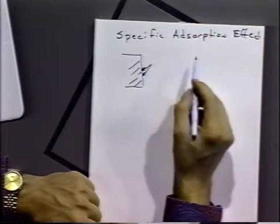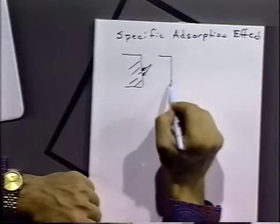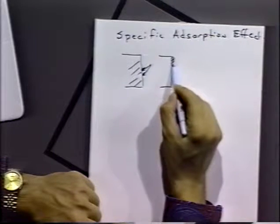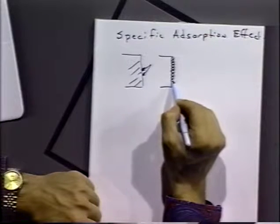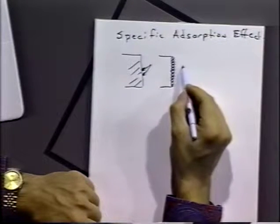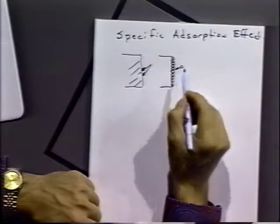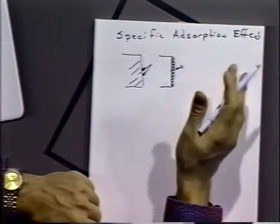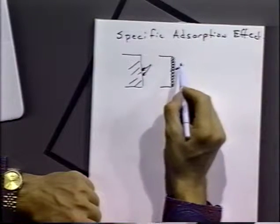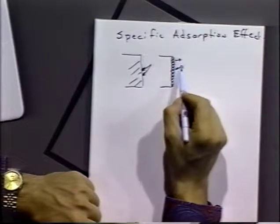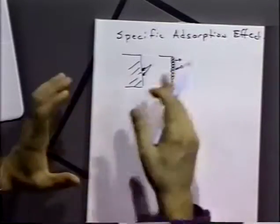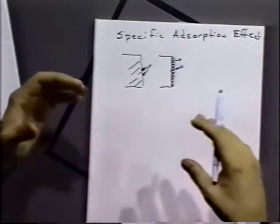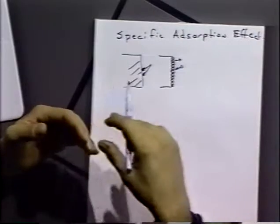Another molecule comes in, and pretty soon the whole surface is covered with molecules or ions and it can be completely covered. Another molecule or ion coming in can no longer adsorb on that metal surface — it may adsorb on top of these molecules, or it may not adsorb, or we may have to wait until a molecule desorbs. So there's not only a thermodynamics of this, but there's also a kinetics process involved in adsorbing or desorbing molecules from the surface.